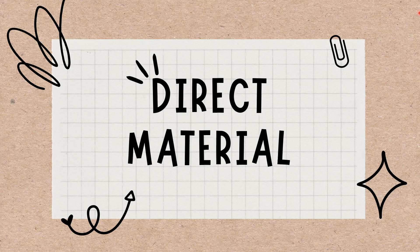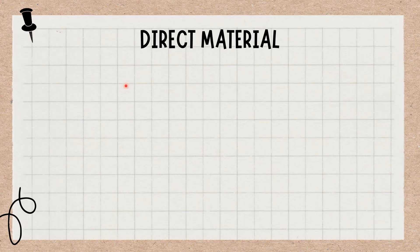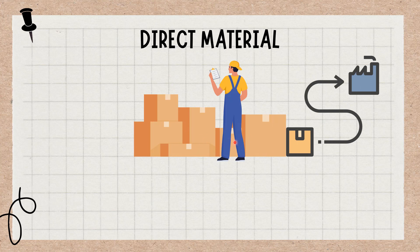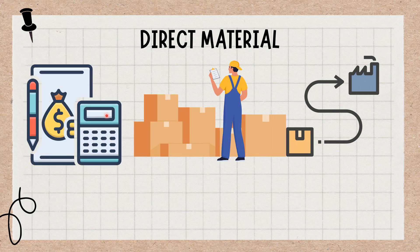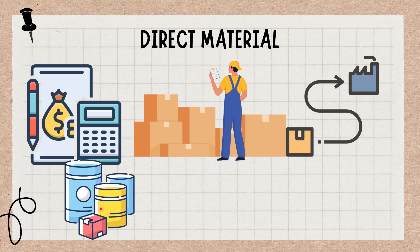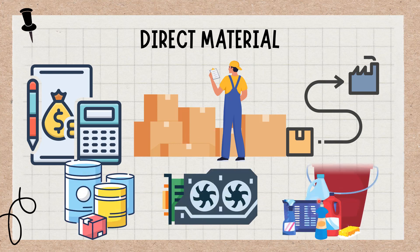In business and accounting, direct material costs are the cost of the materials used in the manufacture or production of a product. These costs are directly traceable to the finished product and can be easily accounted for in the financial records. Direct material costs can include the cost of raw materials, components, and supplies used in production.